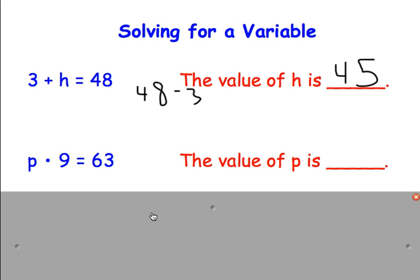This next one might look a little strange to you. It has a P dot 9 equals 63. In mathematics, a dot always means to multiply. So P dot 9 means P times 9 equals 63. So again we're asking ourselves what times 9 equals 63. We know that 7 times 9 is 63. So the value of P is 7.